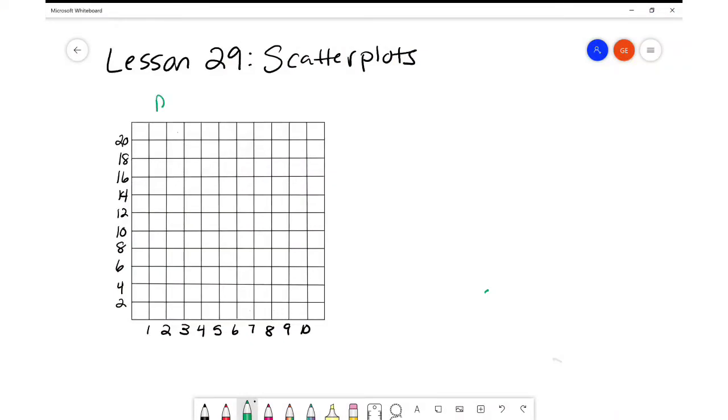Today we're going to learn all about scatter plots in lesson 29, and I thought we could start out with a sports example of points scored in a basketball game. Notice how we have to have a good title. We also need some labels on our x-axis and our y-axis.